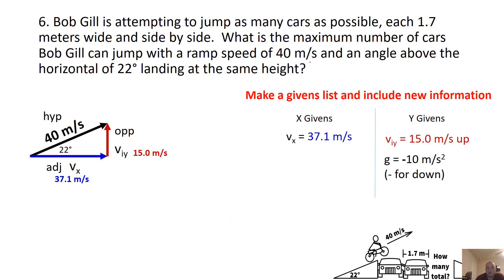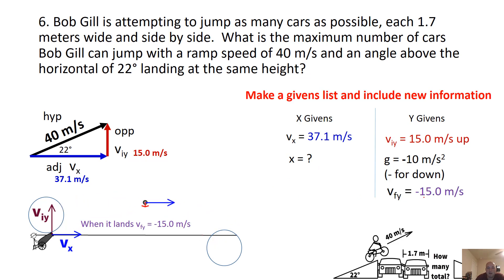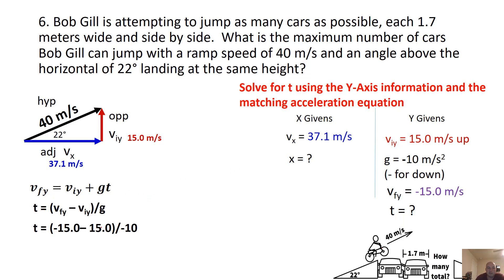We have all our information. We start our givens list and think about what we need. He lands at the same height, so maximum distance means VFY will be negative 15 — the opposite of the initial 15. We use VFY equals VIY plus GT. We rearrange: negative 15 minus 15 equals negative 10 times T, which is negative 30 over negative 10. We get 3 seconds — that's how long he's in the air going up and down.